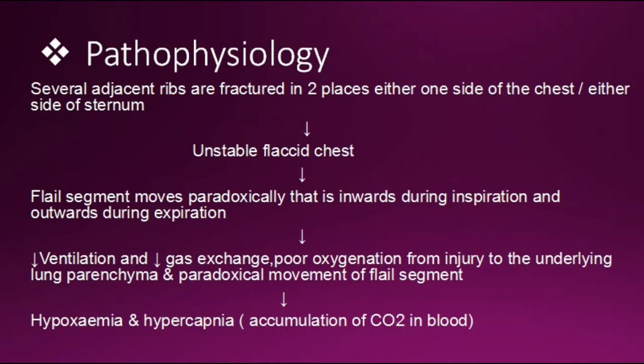You must know the pathophysiology of flail chest. Several adjacent ribs are fractured in two places, either on one side of the chest or either side of the sternum. Then an unstable flail chest occurs. The flail segment moves paradoxically — that is, inwards during inspiration and outwards during expiration.